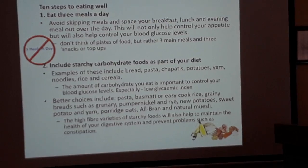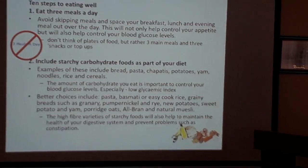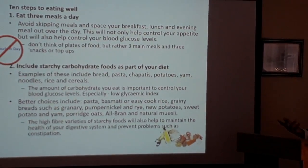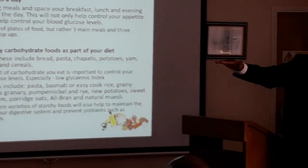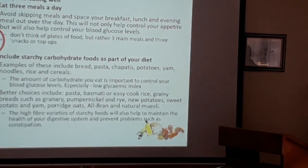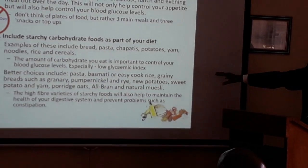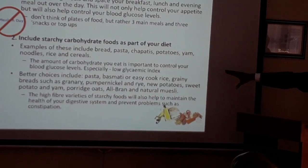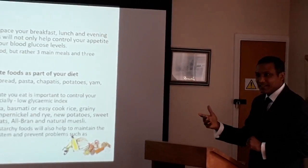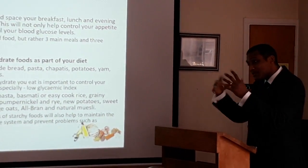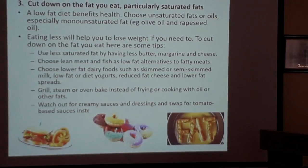Include starchy carbohydrate foods as part of your diet, and make them as complex as possible — complex carbohydrates like starch are slow-release, avoiding sharp glucose spikes. Eating a sweet causes a rapid spike; pasta causes a slow, gradual rise. Whole grains, bran, and potatoes are recommended. Potatoes with the peel on are especially good — the peel adds significant nutritional value and extra fiber.